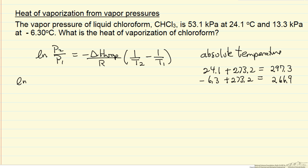So I'll substitute in the log of pressure 2 is 53.1 kilopascals, and pressure 1 is 13.3. So we can take the log because the pressure units cancel. We're going to end up solving first for delta H of vaporization over R.